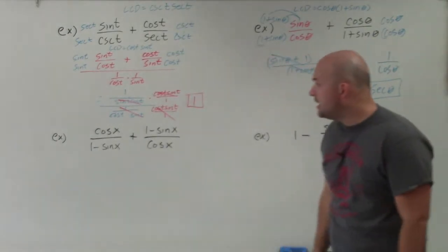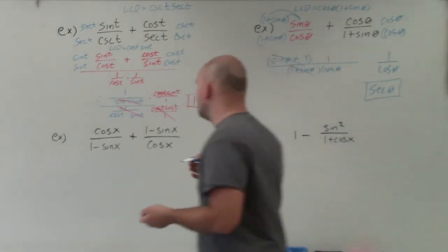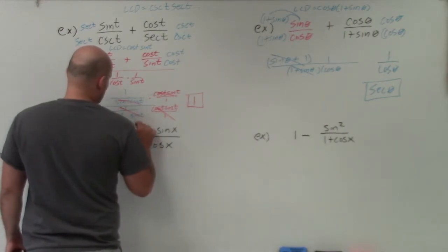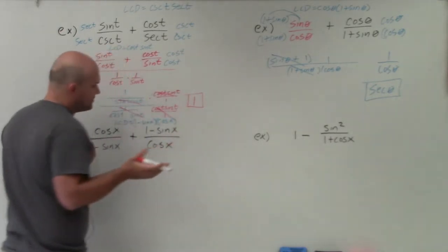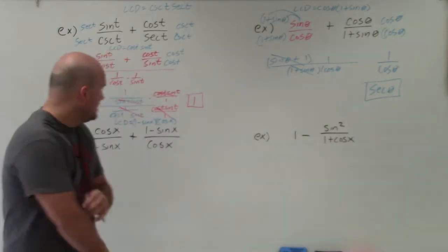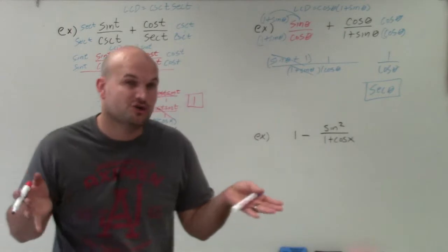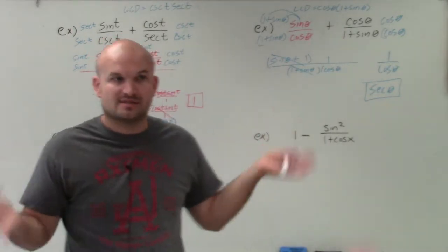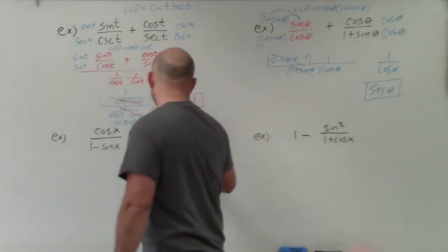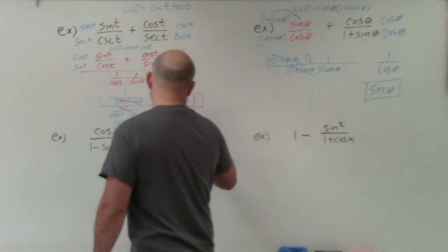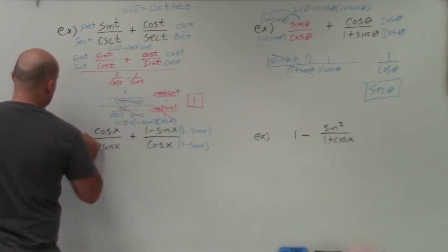Moving to the next example, we again have two denominators, so we need to identify the common denominator. The common denominator is going to be 1 minus sine of x times cosine of x — again, the product. For example, if we had cosine of x and cosine squared of x, we could just use cosine squared of x since both divide into it. But here we have different functions, so we use the product. I'll multiply by 1 minus sine of x on the top and bottom of the first term, and cosine of x on the top and bottom of the second.